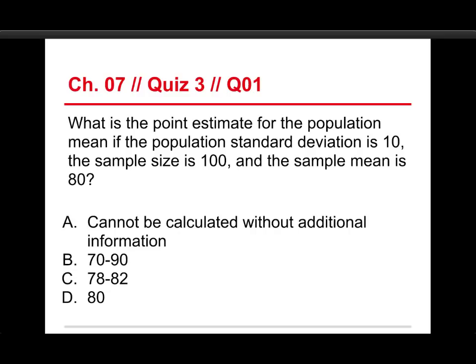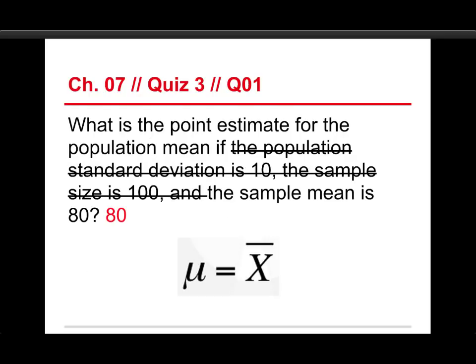Well, this is kind of a trick question. The answer is 80, and the reason for that is it's a point estimate. It's only asking for a single number. In fact, most of the information in this question is irrelevant. We can just cross out the stuff about the population standard deviation and the sample size because that doesn't matter in getting the point estimate. All we need is the sample mean, and the sample mean is the point estimate for the population mean.